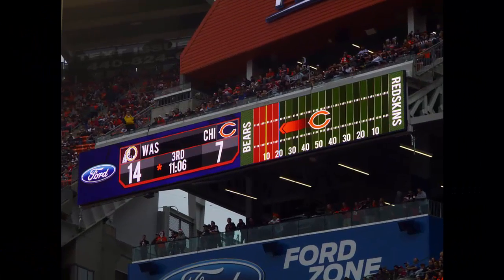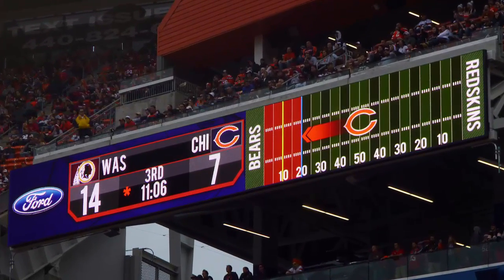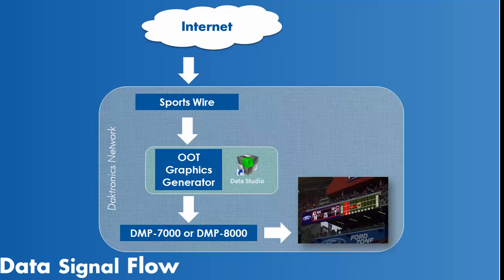The software works in conjunction with Daktronics Sportswire 4000 to generate drive chart images of any NFL game, complementing traditional out-of-town score displays. The Graphics Generator acquires game data from Sportswire and composites an image that represents the current drive of the out-of-town game. The image is written to the Bitmaps folder on the DMP7000 or MediaRTD folder on the DMP8000 for use on the display. New images are written based on the hold time set in Sportswire.